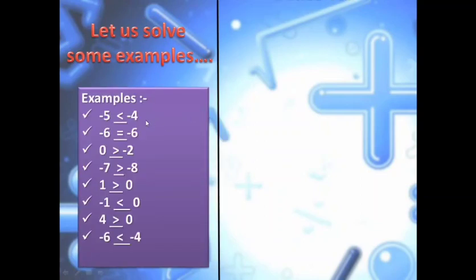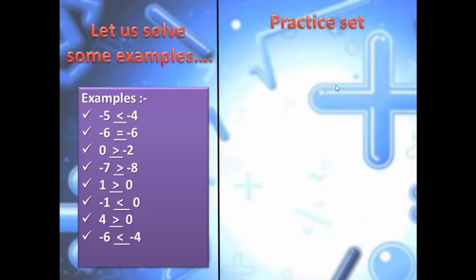Here: minus 5 and minus 4 — which is less? Minus 5, so less than sign. Minus 6 and minus 6 — both are the same, so equal to. 0 and minus 2 — 0 is bigger, so the greater than sign comes to 0. Minus 7 and minus 8 — the number to the right is always bigger, so minus 7 is on the right, so greater than sign. 1 is greater than 0, but minus 1 is less than 0. 4 is greater than 0, but minus 6 is less than minus 4.